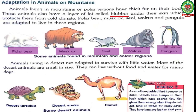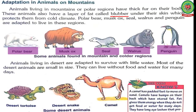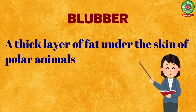Now, adaptations in animals on mountains. Animals living in mountains or polar regions have thick fur on their body. These animals also have a layer of fat called blubber under their skin which protects them from cold climates. Underline the word blubber — the definition of blubber is: a thick layer of fat under the skin of polar animals.